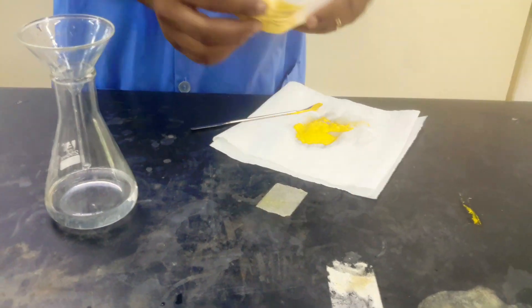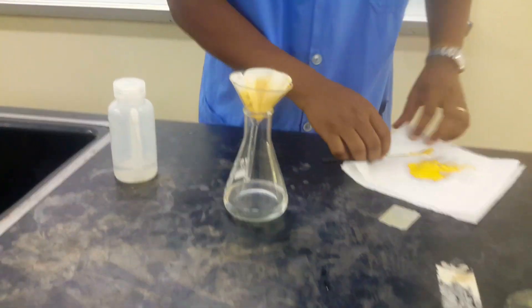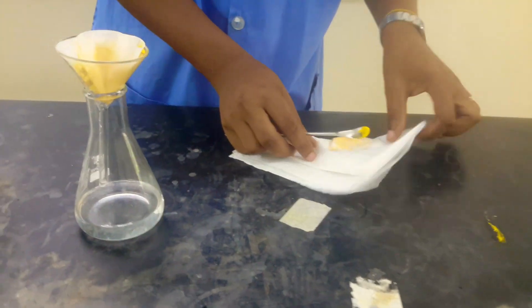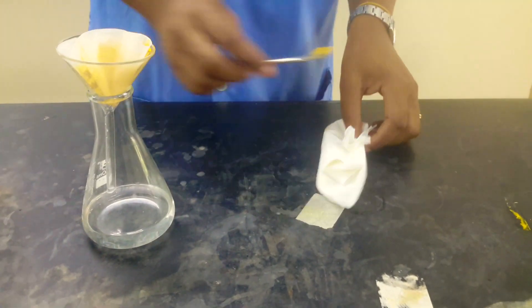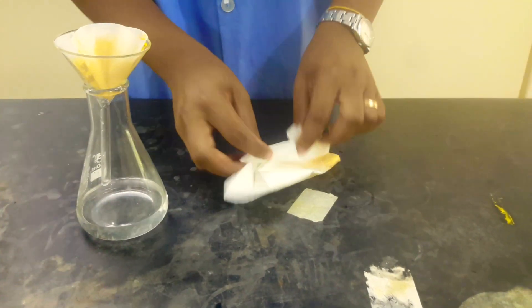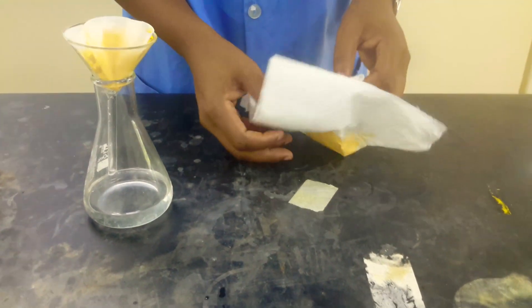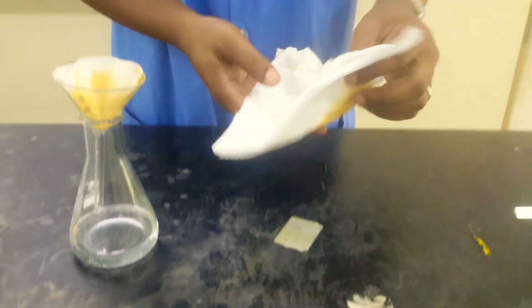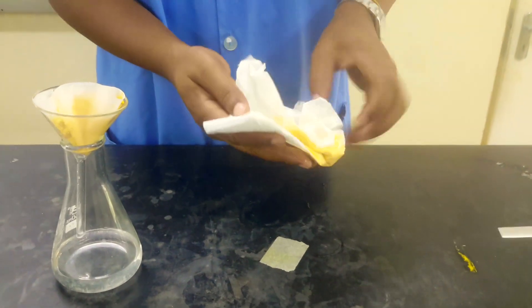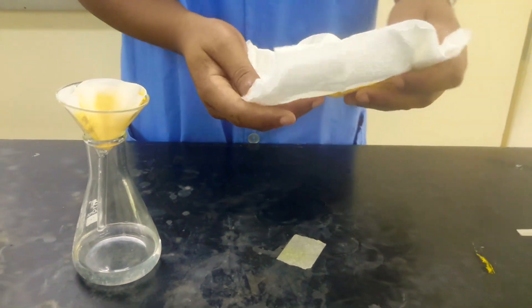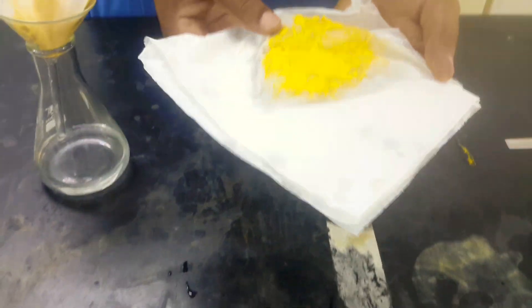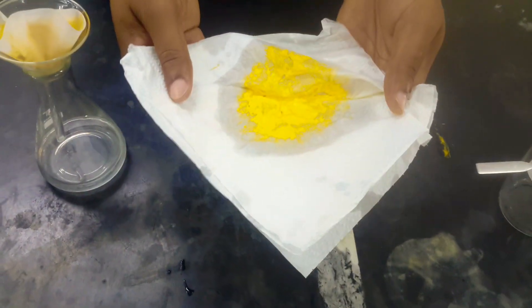So we'll just pat it dry between paper towel and it will be good to go. So let me do a little bit more but this is our final product. It's a little powdery, bright yellow lead iodide. So there we go.